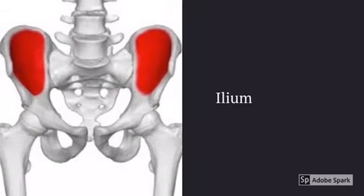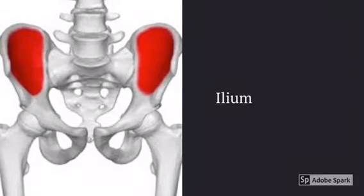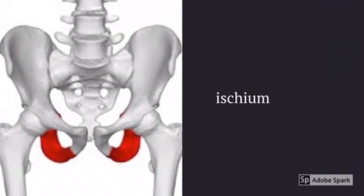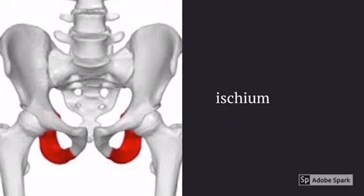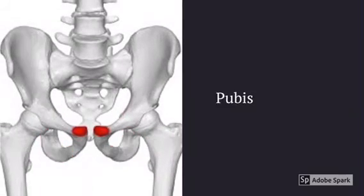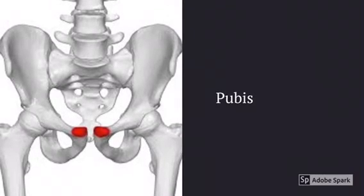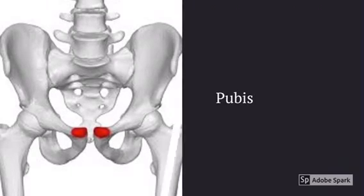There are three bones within your hip. The first one is called the ilium — I think that the ilium looks like an elephant ear. The ischium is like your butt bone; if you sit really hard down on a surface, sometimes you can feel it. This is your pubis, which makes up the third part of your hip bone: the ilium, the ischium, and the pubis.